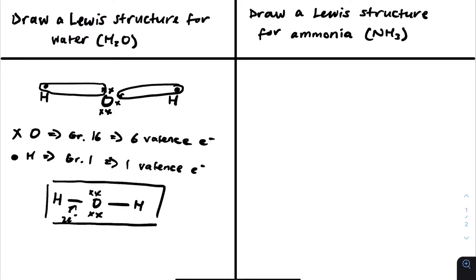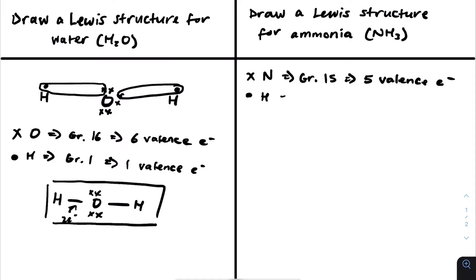Now we're going to draw the Lewis structure for ammonia, which is NH₃. We'll write down the group number for each element. Nitrogen, represented with X's, is in group 15, so it has five valence electrons. Hydrogen, which we already determined is in group 1, has one valence electron. Most elements want to fill their outer shell with eight electrons — this is known as the octet rule — except hydrogen and helium, which only have two.